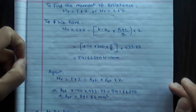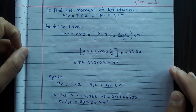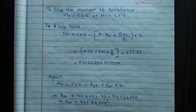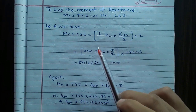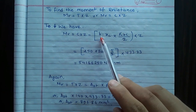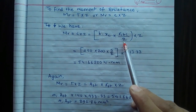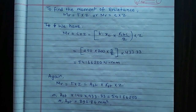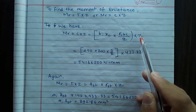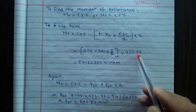To find the moment of resistance: MR = T × Z (tensile force × lever arm) or compressive force × lever arm. MR = C × Z = b × XC × σCBC/2 × Z = 250 × 200 × 5/2 × 433.33 mm.